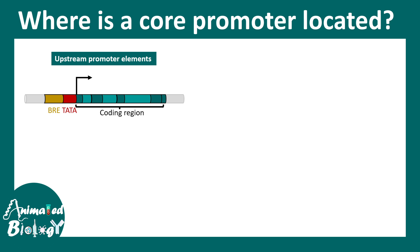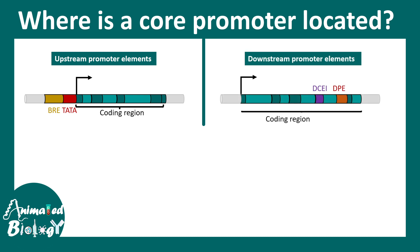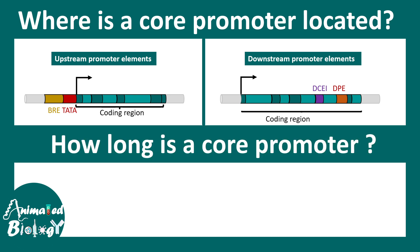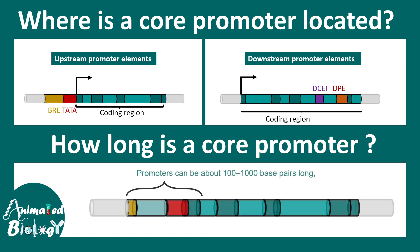There could be different types of promoter and core promoter elements. The promoter comprises several core promoter elements. There could be upstream core promoter elements such as the TATA box or BRE elements, which are situated upstream of the transcription start site. There could also be downstream promoter elements located downstream of the transcription start site.